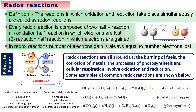The reactions in which oxidation and reduction take place simultaneously are called redox reactions. Every redox reaction is composed of two half-reactions: 1) the oxidation half-reaction, in which electrons are lost, and 2) the reduction half-reaction, in which electrons are gained. In redox reactions, the number of electrons gained is always equal to the number of electrons lost. Redox reactions are all around us — the burning of fuels, the corrosion of metals, the processes of photosynthesis, cellular respiration, etc. involve oxidation and reduction. Some common examples are combustion of methane, oxidation of copper, and photosynthesis, as shown below.